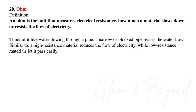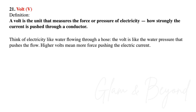Number twenty, ohm. An ohm is the unit that measures electrical resistance — how much a material slows down or resists the flow of electricity. Think of it like water flowing through a pipe: a narrow or blocked pipe resists the water flow, similar to how a high-resistance material reduces the flow of electricity, while a low-resistance material lets it pass easily. Number twenty-one, volt. A volt is the unit that measures the force or pressure of electricity — how strongly the current is pushed through a conductor. Think of electricity like water flowing through a hose: the volt is like the water pressure that pushes the flow. Higher volts mean more force pushing the electric current.